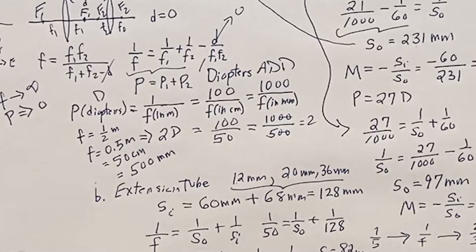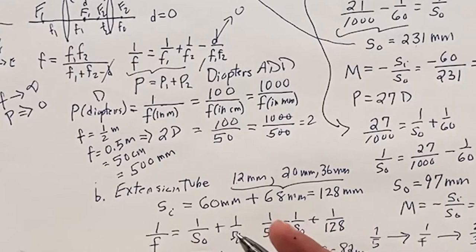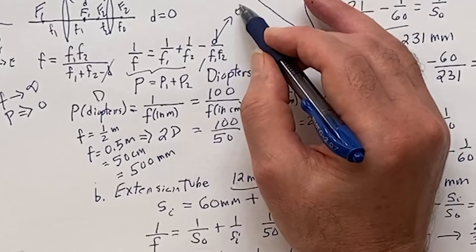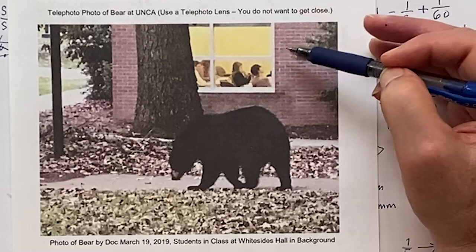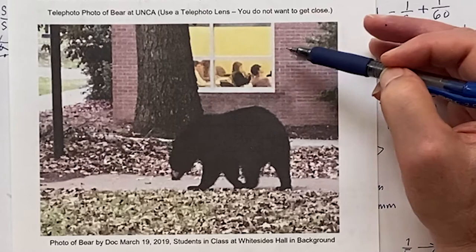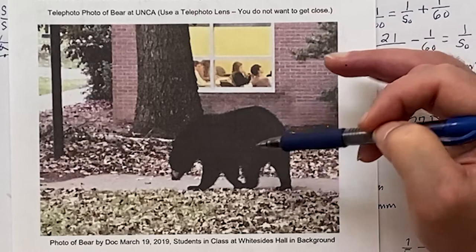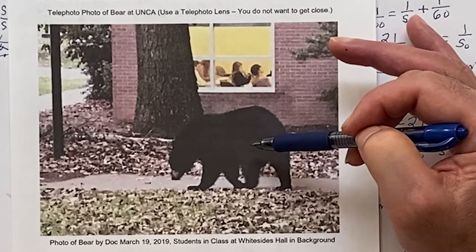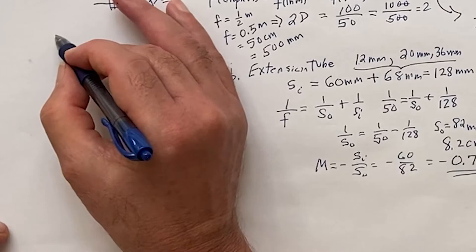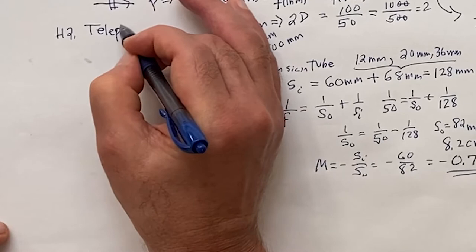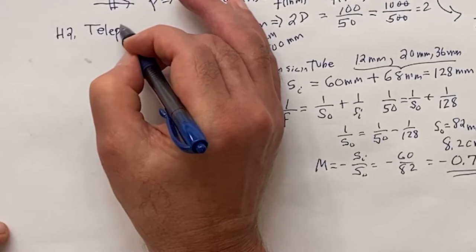Now we find the effective focal length using F_eff = F1·F2 / (F1 + F2 − D) = 50×(−40) / (50 − 40 − 30) = −2000 / (−20) = 100 mm. That's a telephoto lens. The relative magnification is 100/50 = 2×. So we can sell the diverging rear lens alone as a '2× teleconverter' — pop off your regular lens, insert the teleconverter between the camera body and your 50 mm lens, and you double your effective focal length at low cost.